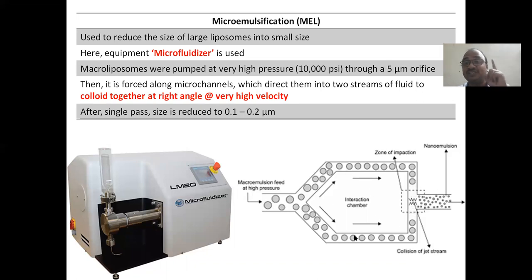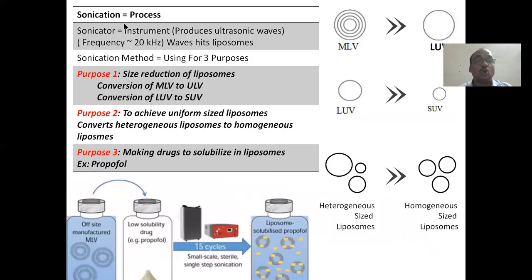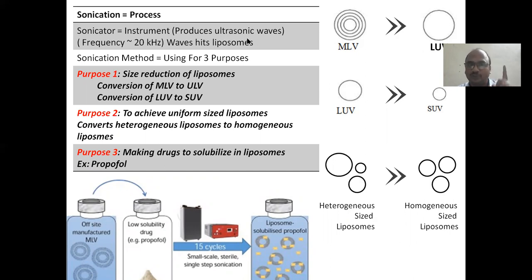This photograph shows what is happening inside the equipment — you have to draw the diagram in the examination. After a single passage, you will get liposomes of 0.1 to 0.2 microns. Sonication is a process; a sonicator is the instrument. It is called sonication because it produces ultrasonic waves — frequency is almost equal to 20 kilohertz — and these waves hit the liposomes.